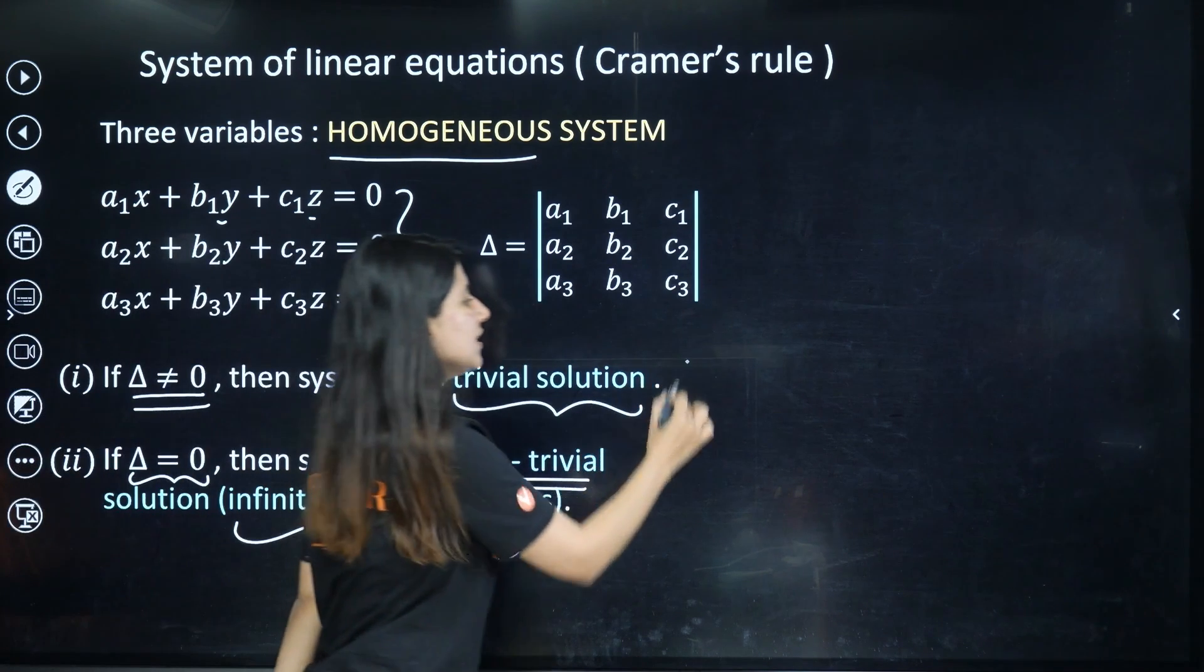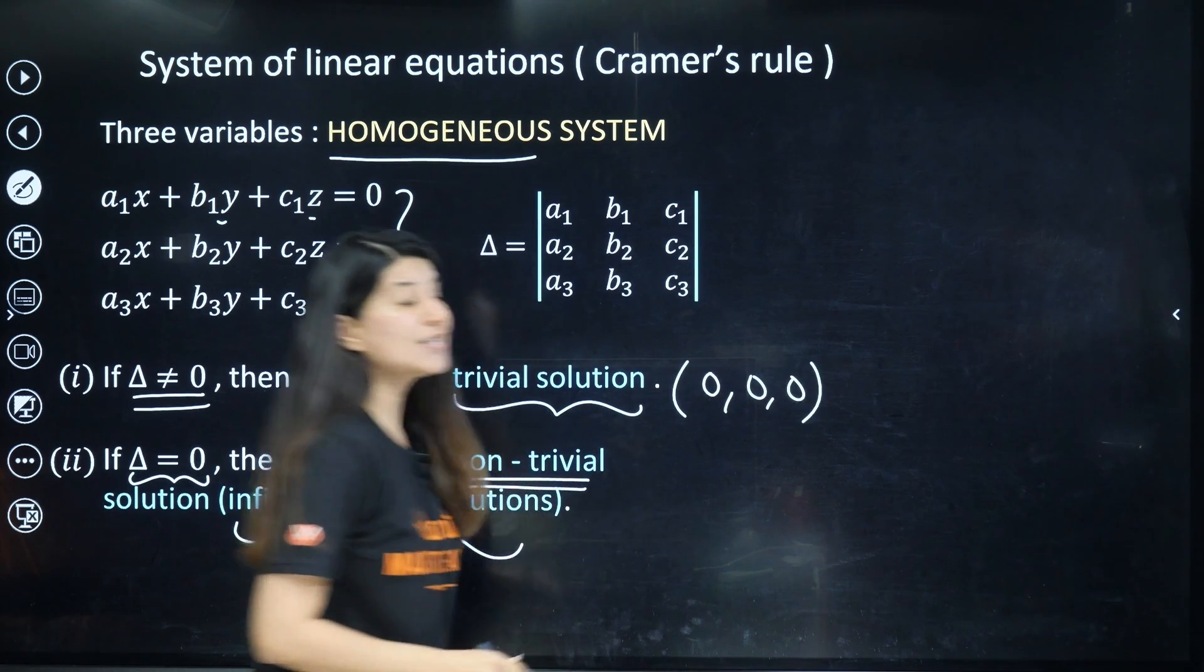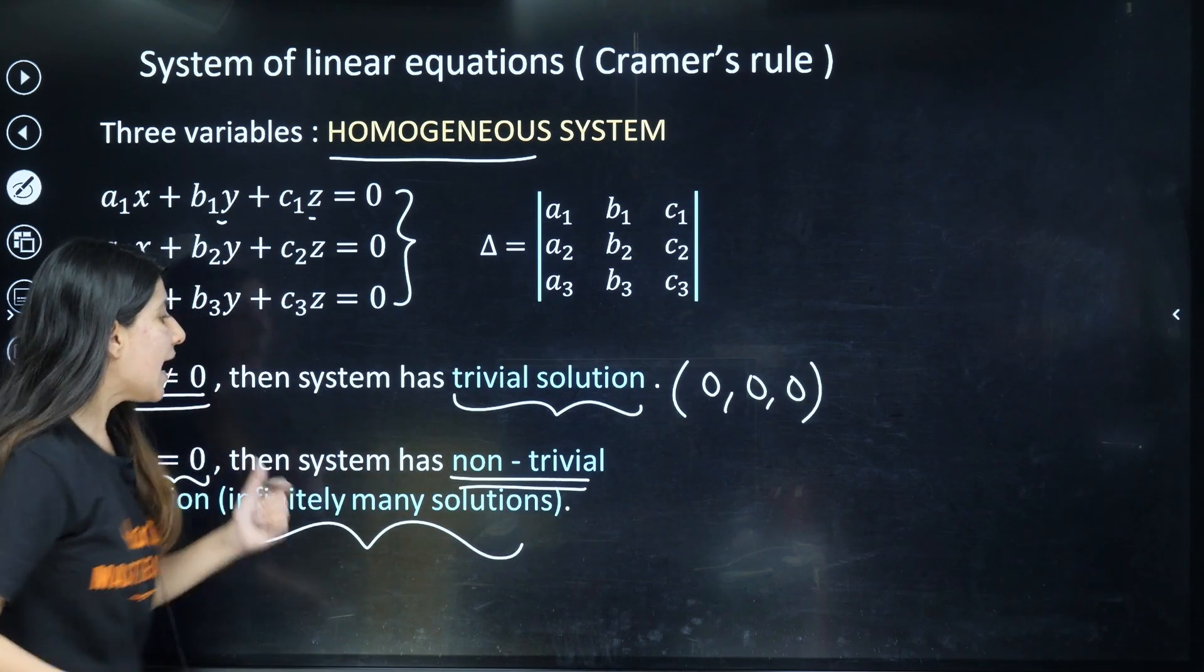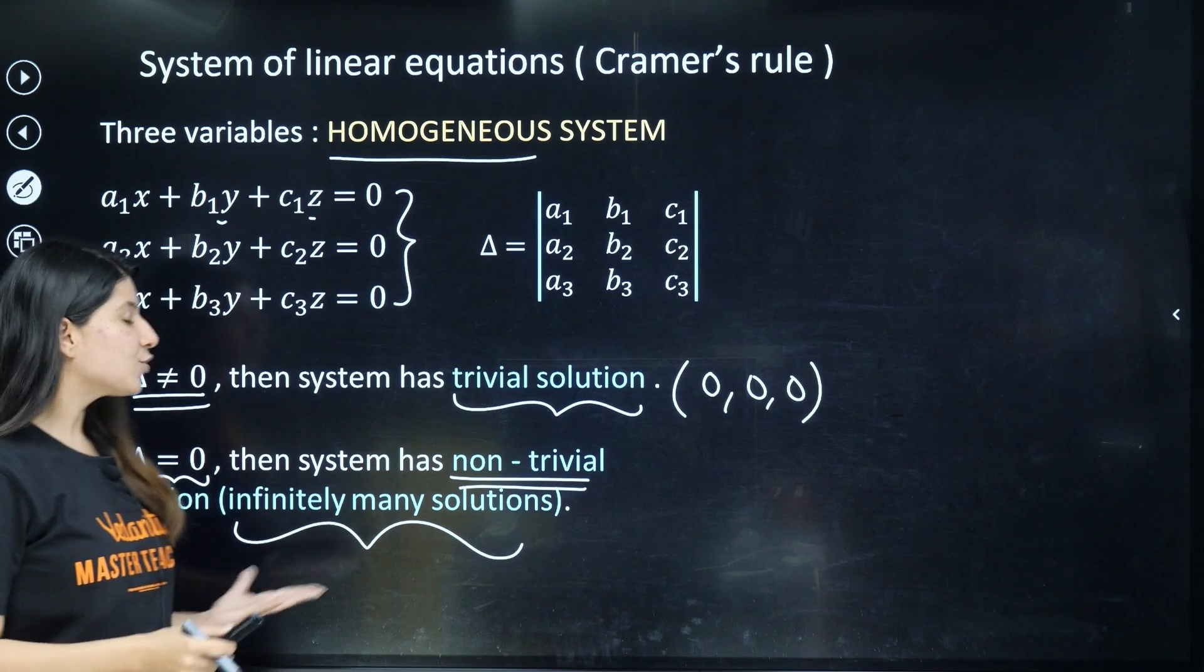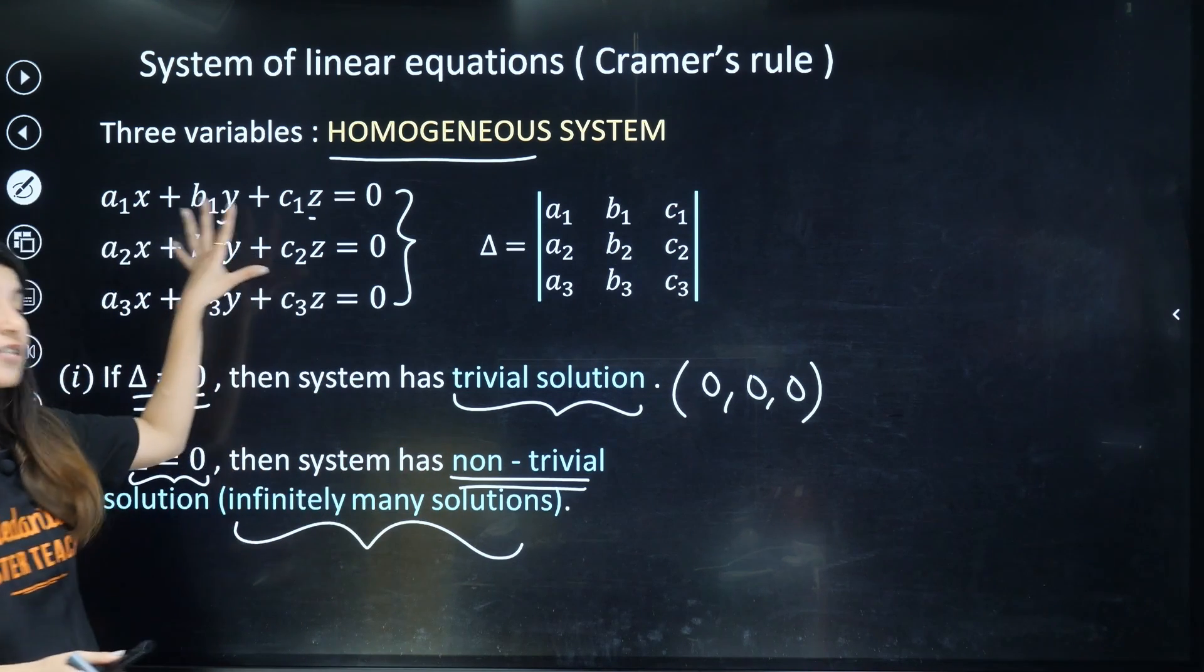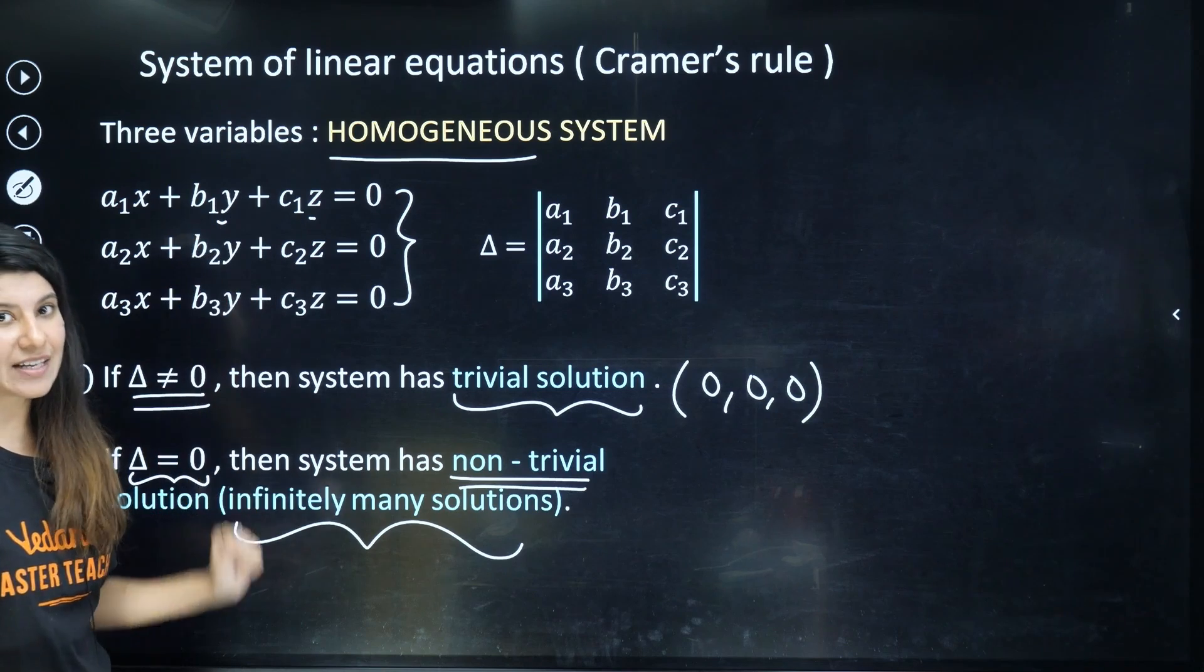Here, trivial solution means that only (0, 0, 0) is going to satisfy this equation. Non-trivial solution means that there are so many values of x, y, z which are going to satisfy this equation.